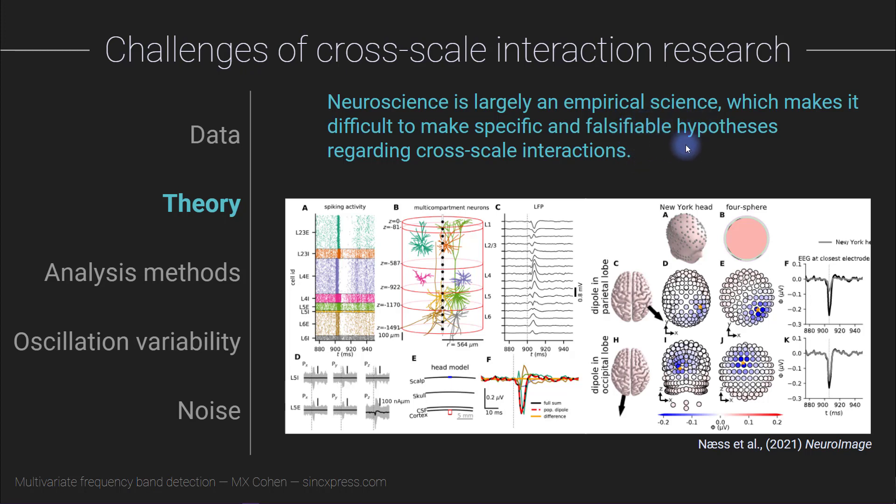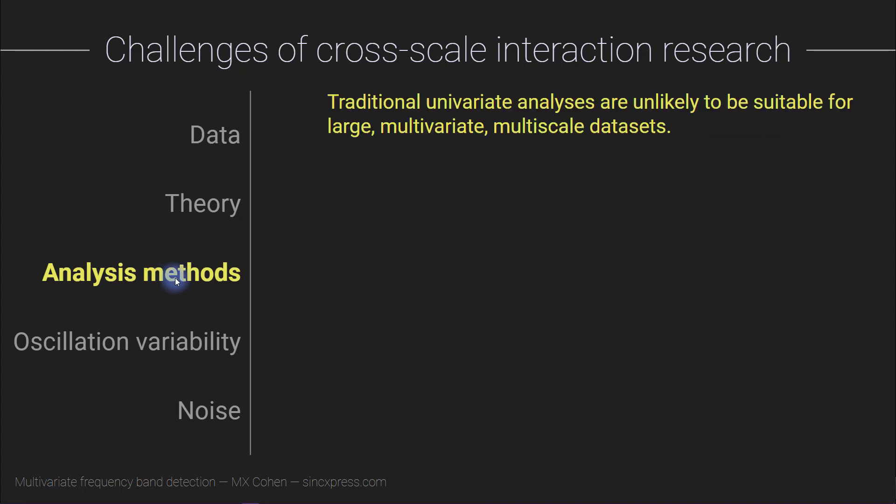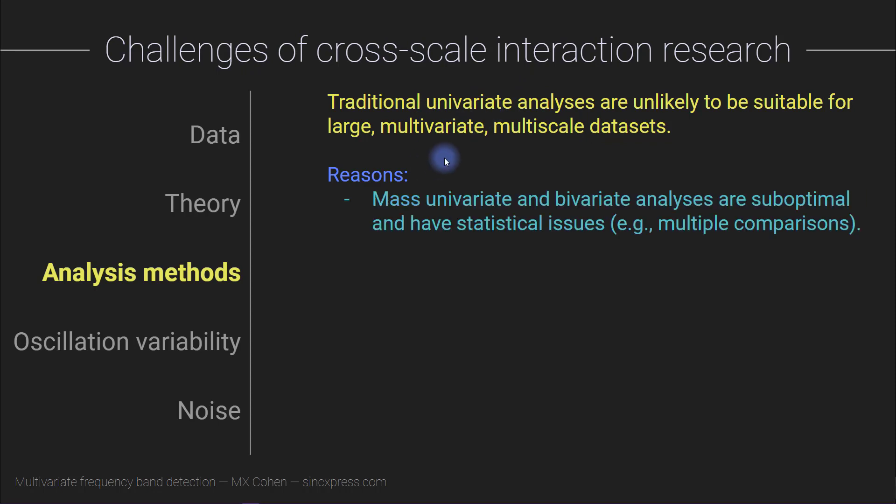Another challenge of cross-scale interaction research is the data analysis methods. The issue is that most of the analyses, the statistical and data analysis methods that are used in neuroscience, come from a long history of traditional univariate analyses. Traditional univariate analyses are fine, but arguably they are not suitable for the kinds of large-scale, multivariate and multiscale, really high-dimensional data sets that we are beginning to acquire. There are several reasons for this claim. One is that mass univariate and even bivariate analyses tend to run into statistical issues, like multiple comparisons issues.